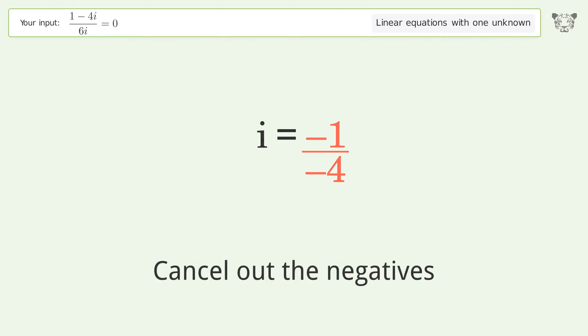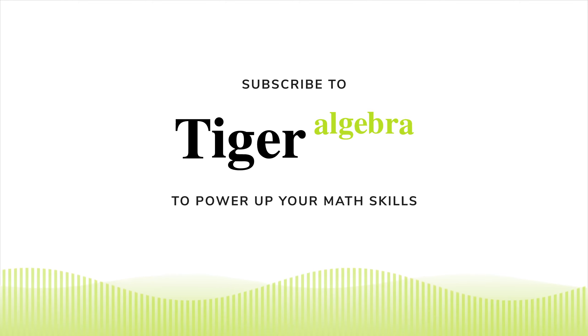Cancel out the negatives. And so the final result is i equals one over four.